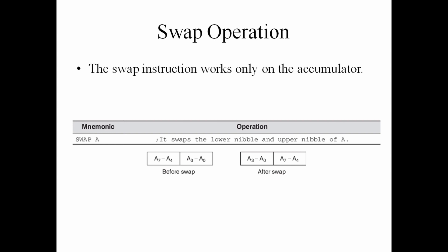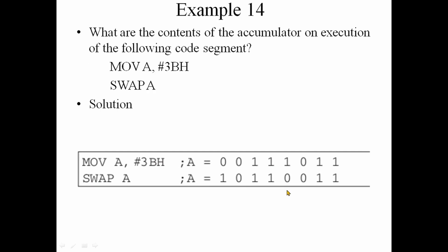Swap operation: the SWAP A function exchanges the upper and lower nibbles of the accumulator. A7–A4 swaps with A3–A0. For example: MOV A, 3BH. The value 3BH is loaded, then SWAP A is applied giving B3H.